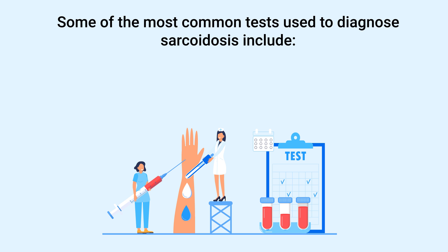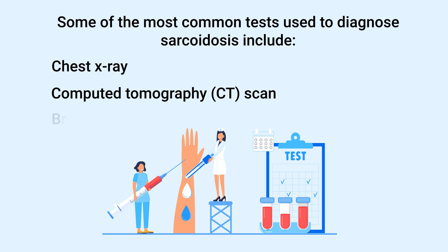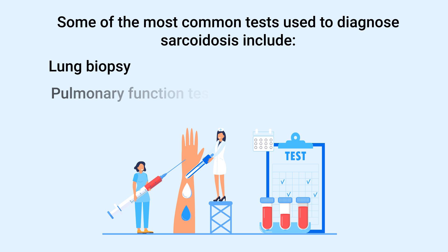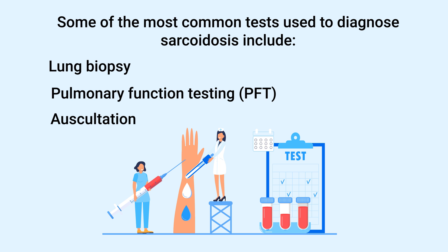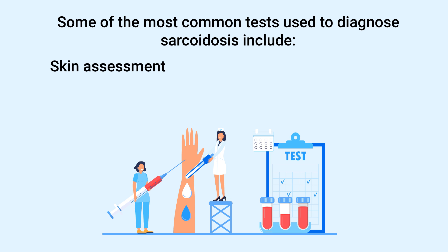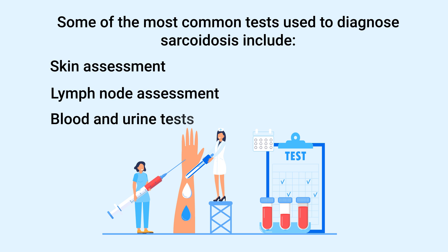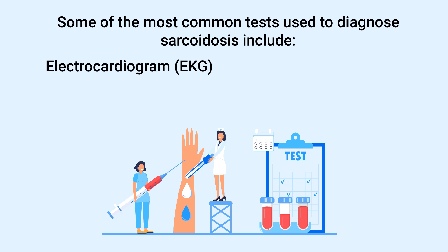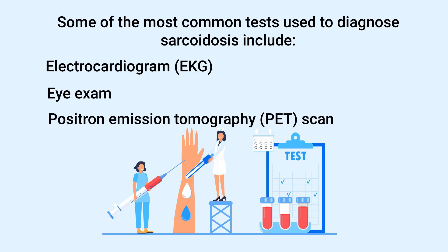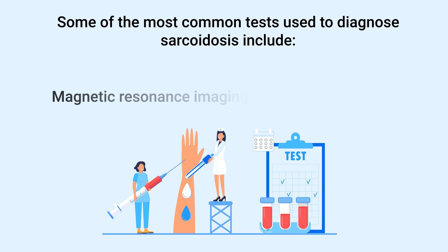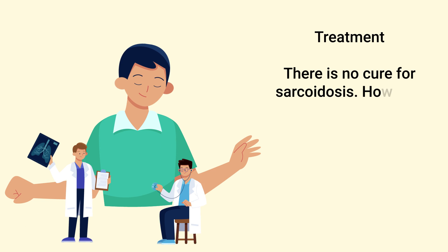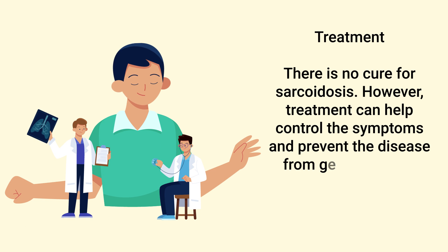Some of the most common tests used to diagnose sarcoidosis include a chest X-ray, CT scan, bronchoscopy, lung biopsy, pulmonary function testing, auscultation, skin assessment, lymph node assessment, blood and urine tests, electrocardiogram, eye exam, PET scan, and an MRI.